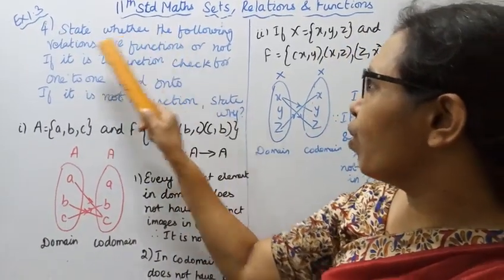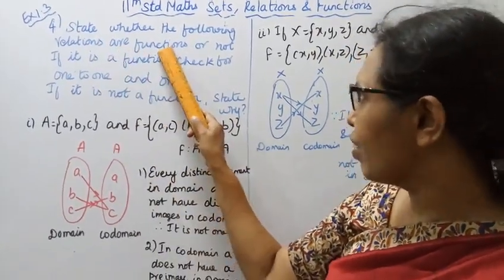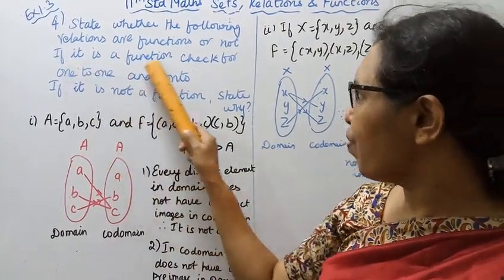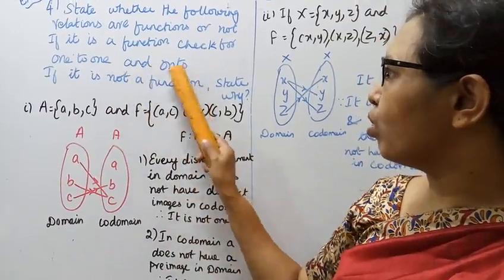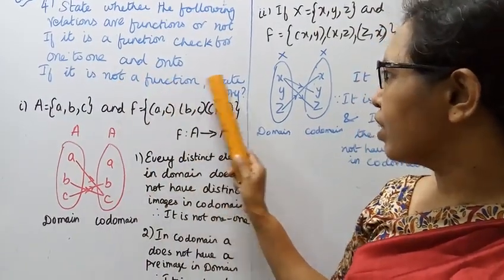State whether the following relations are functions or not. If it is a function, check for one to one and onto. If it is not a function, state why.